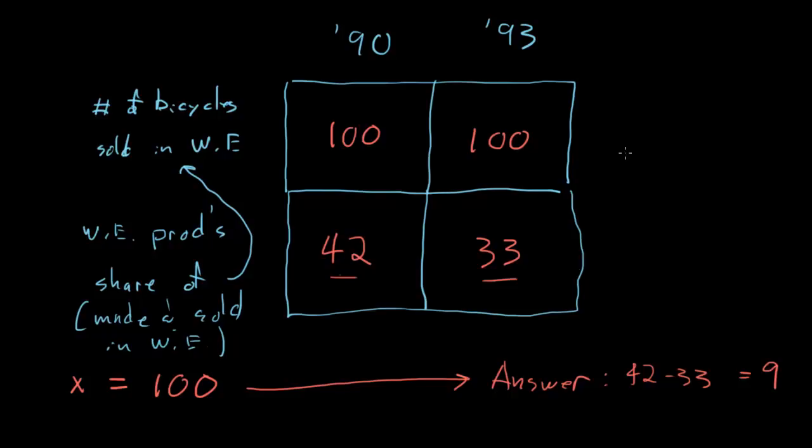Now all we have to do is go to our answer choices and plug in 100 for x and wait for the one that leads to 9. So, plugging in 100 for x, we can pretty quickly see that B is not going to lead to 9 and C is not going to lead to 9 and E is not going to lead to 9, but both A and D are looking pretty good. So if we look at A,